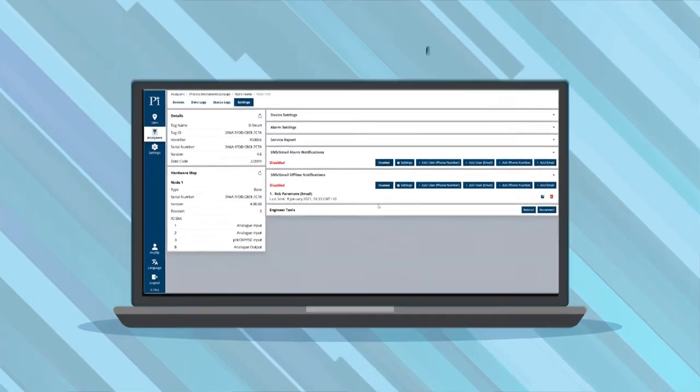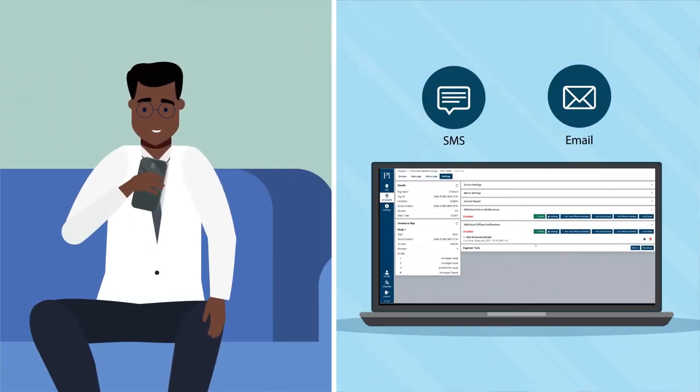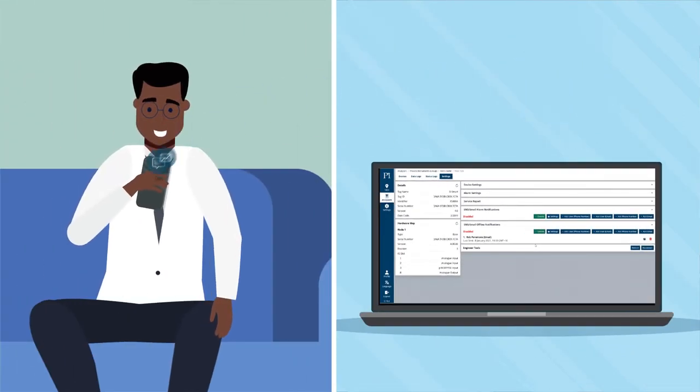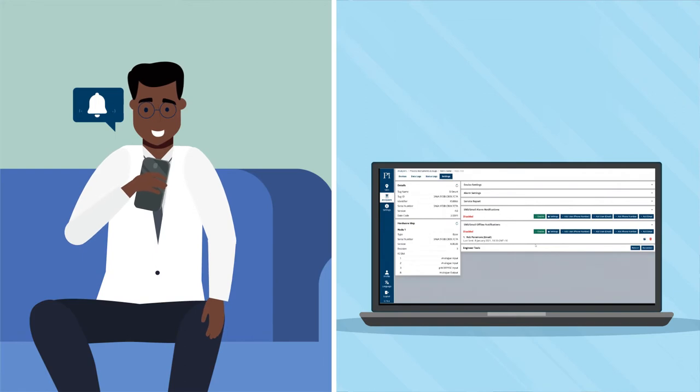Now Bob sets up email and SMS alarms to tell him if anything changes in real time with live data. If it does, he can respond on his phone from anywhere.